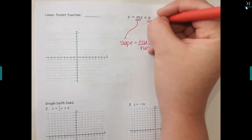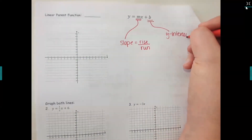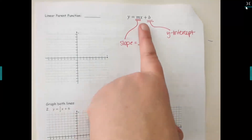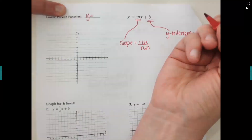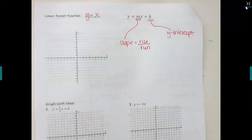B is going to be your y-intercept. If it's not a HOY or VUX, in order for it to be a line it has to follow this formula. Your parent function is going to be this equation but with no numbers plugged in — so for the parent equation, put y equals x, keeping just the x without any numbers for m or b.